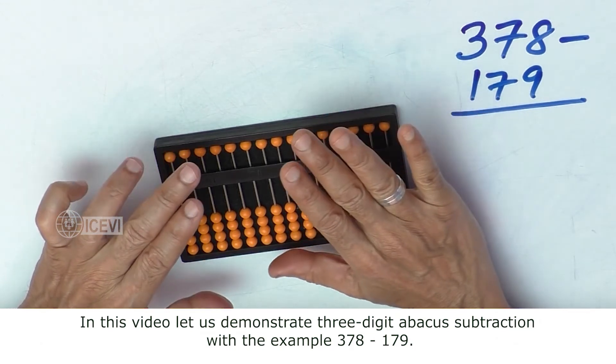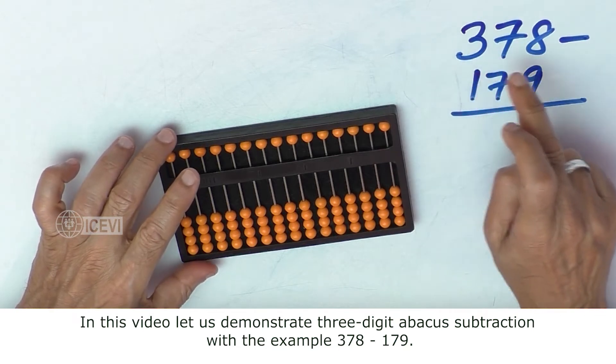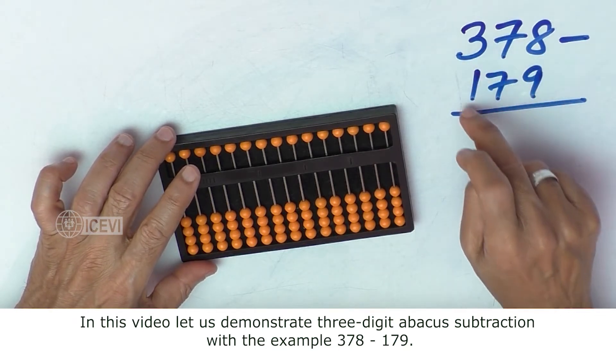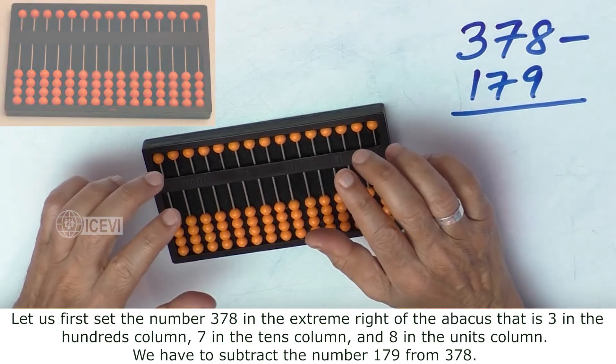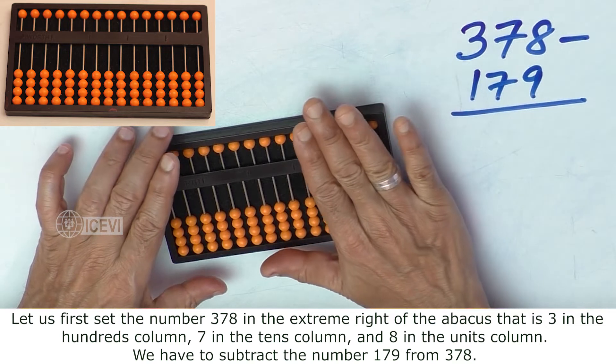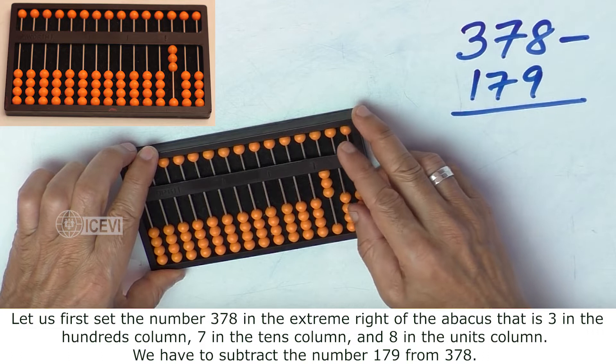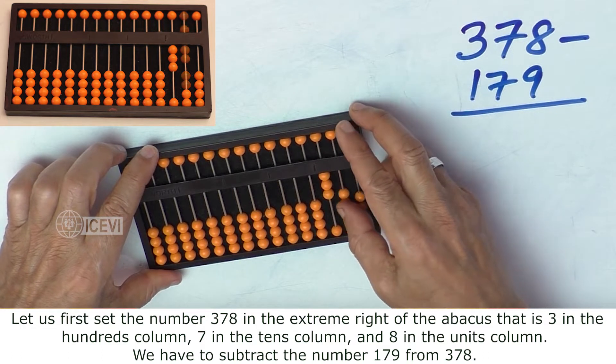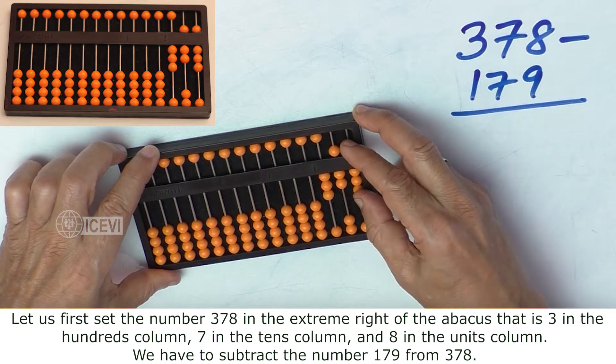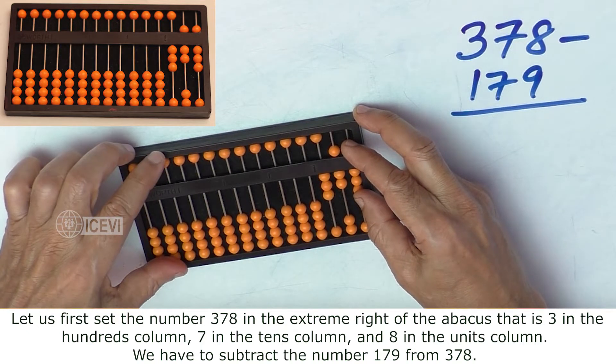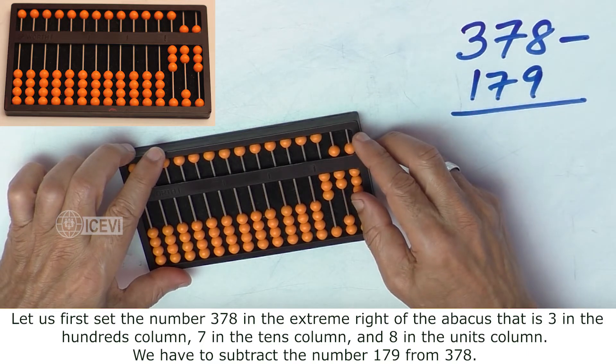let us demonstrate 3-digit abacus subtraction with example 378-179. Let us first set the number 378 in the extreme right of the abacus, that is 3 in the hundreds column, 7 in the tens column, and 8 in the units column. We have to subtract the number 179 from 378.